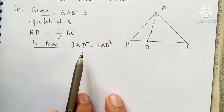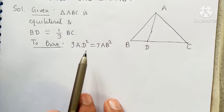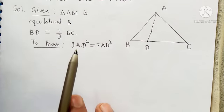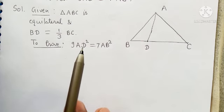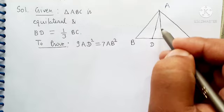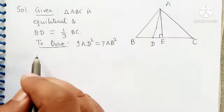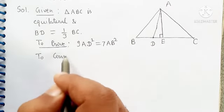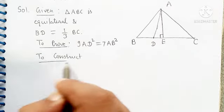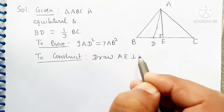Here AD square is used, so we can say we should apply Pythagoras theorem, and for that theorem there should be a right triangle. So we have to construct. We construct AE perpendicular to BC. Draw AE perpendicular to BC.